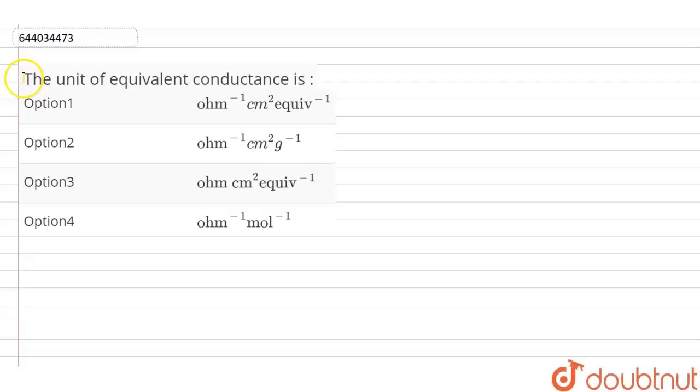Here is a question in which the unit of equivalent conductance is: Option 1, per ohm centimeter square per equivalent; Option 2, per ohm centimeter square per gram; Option 3, ohm centimeter square per equivalent; Option 4, per ohm per mol.